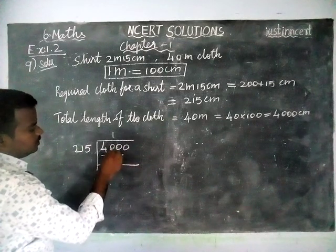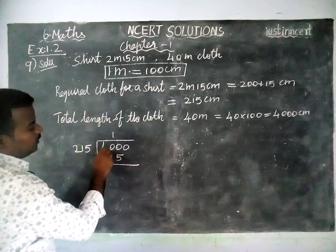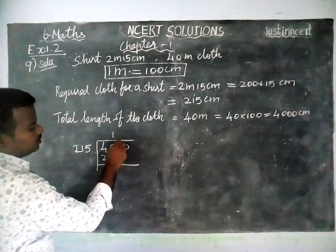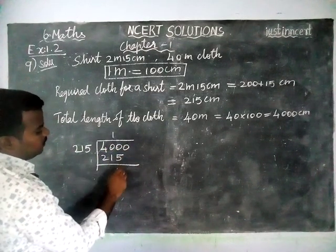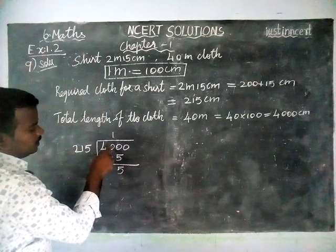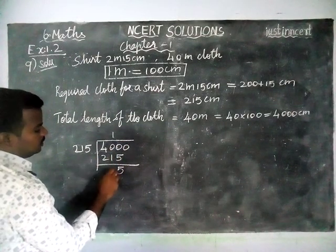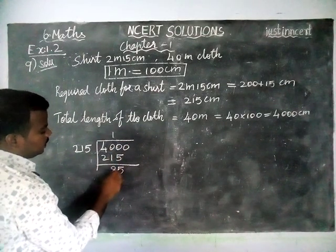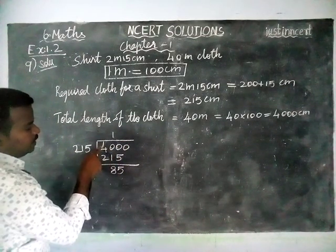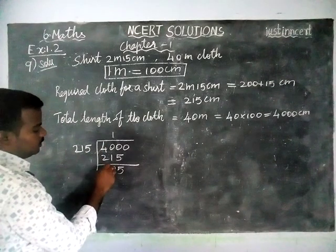The remainder is remaining. We are borrowing, so 10 minus 5 is equal to 5. Here, 9 is there. 9 minus 1 is equal to 8. Here, only 3 is there. 3 minus 2 is equal to 1. So the remainder is 185. Now we are taking this 0 also, making it 1850.